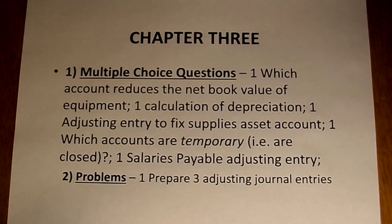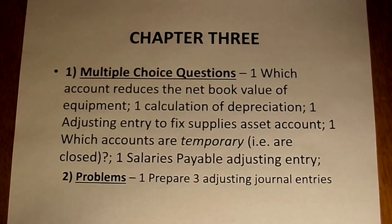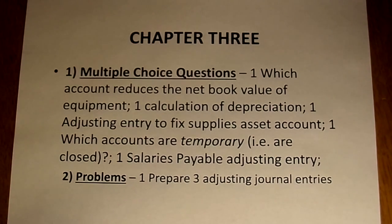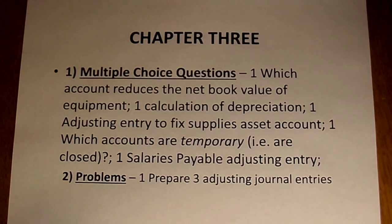There is one problem from Chapter 3. In the outline, multiple choice is listed as one and problems as two, but that doesn't mean there are two problems — just one. The problem is: prepare three adjusting entries. If you remember, there was a video where three adjusting entries were shown — those are the three.